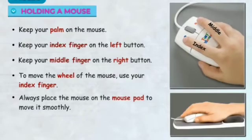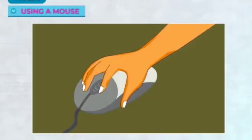Using a mouse: You can use the mouse by clicking it. Pressing the mouse button is called clicking. By clicking, you can draw and select objects.